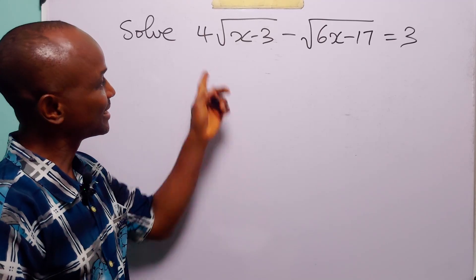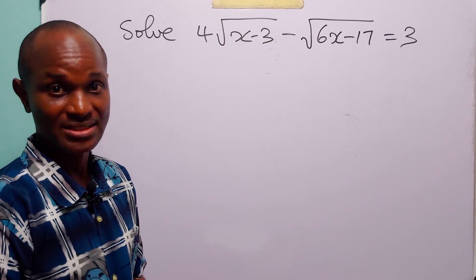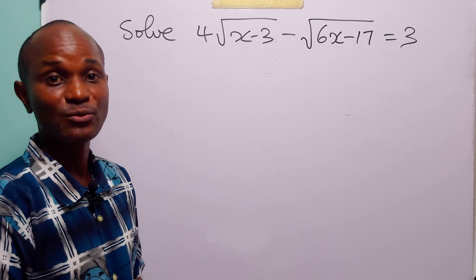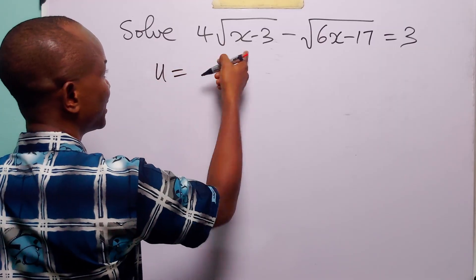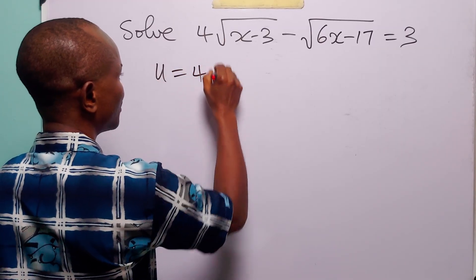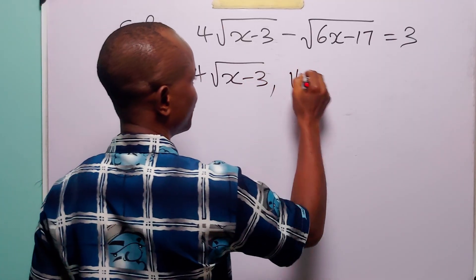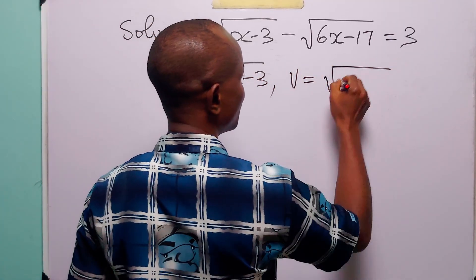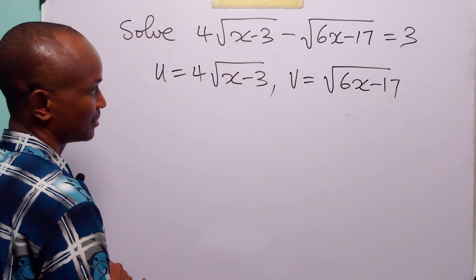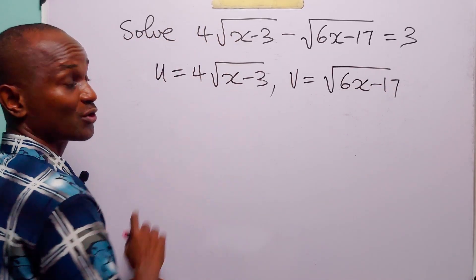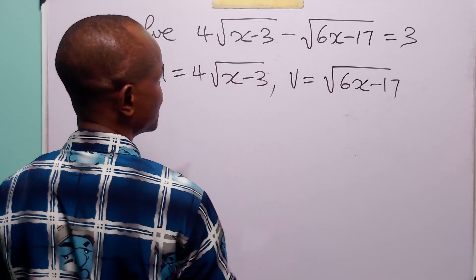Hello and welcome. There's a very simple way to solve radical equations such as this. We are going to begin with two substitutions: let u be equal to 4√(x-3) and v be equal to √(6x-17). With these two substitutions, the original equation becomes u minus v equals 3.